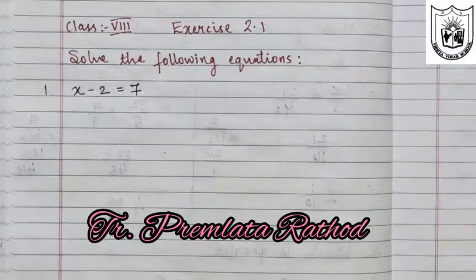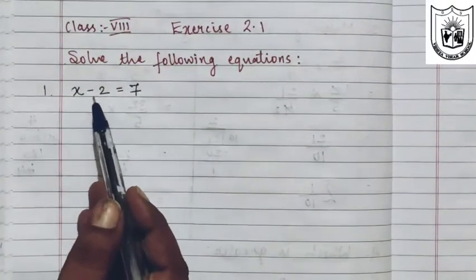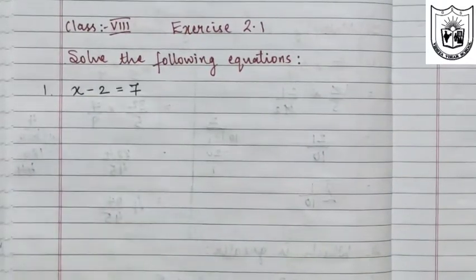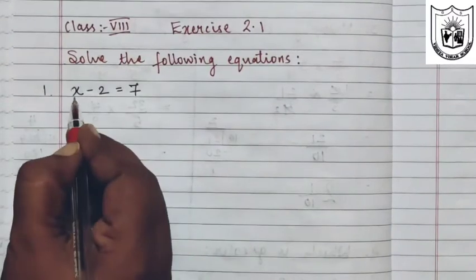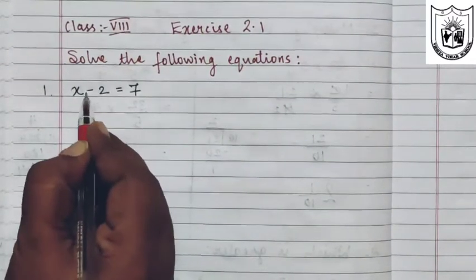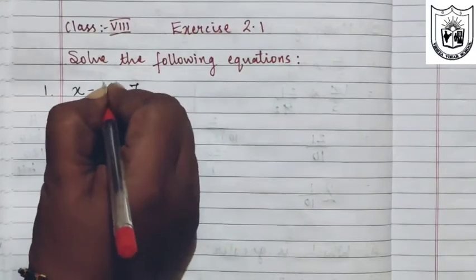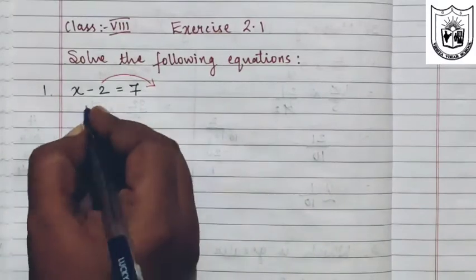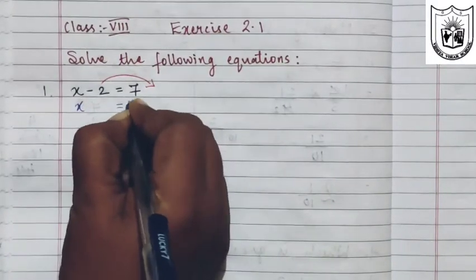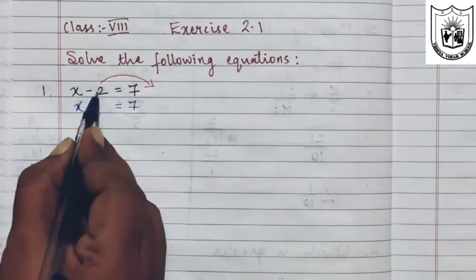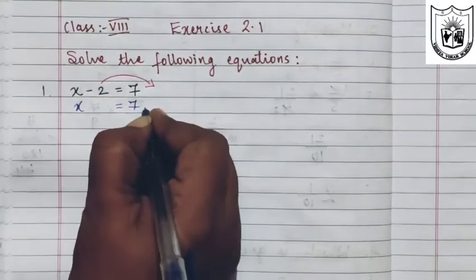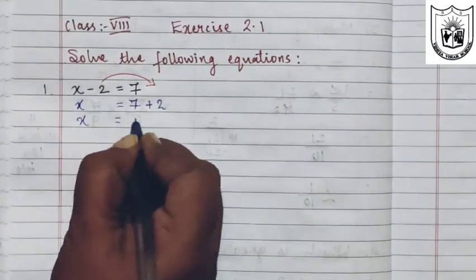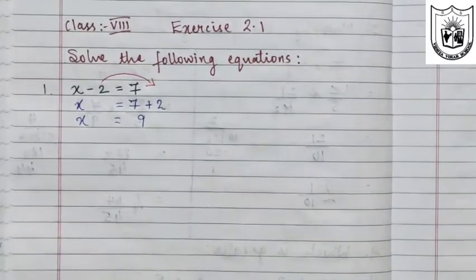Solve the following equation. The first problem is x minus 2 equals 7. We have to find the value for x. Between the variable and this number we have subtraction. So when this number is transposed to the other side, negative 2 will become positive 2. So x equals 7 plus 2, that is 9.